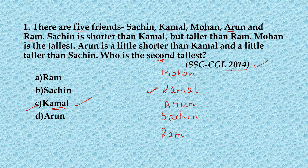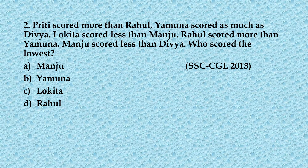This type of question is very important for different competitive exams. By changing the criteria, five or six people are given to you and you have to arrange them in a particular sequence and then answer according to what has been asked in the question. These type of questions are very common in different competitive exams.